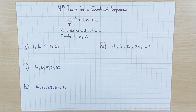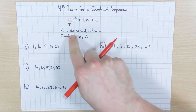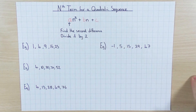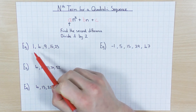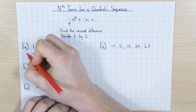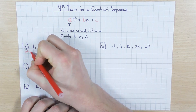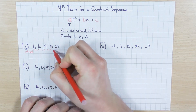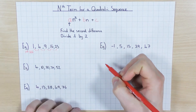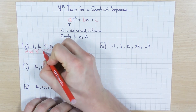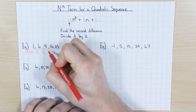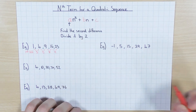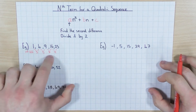To find 'a', we find the second difference and then divide it by 2. So the first thing you do is find the first difference between each term. The difference between 1 and 4 is 3, 4 and 9 is 5, 9 and 16 is 7, and 16 and 25 is 9. That's the first difference, and if it were a linear sequence they would all be the same, but as you can see, they're not.